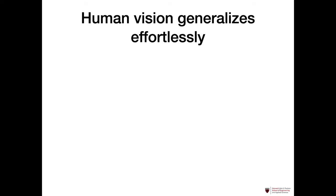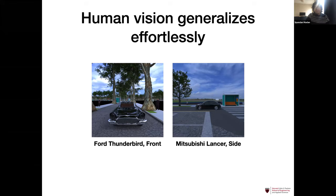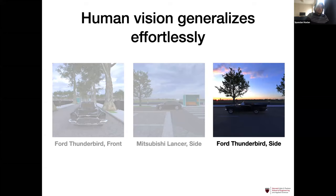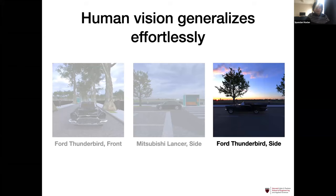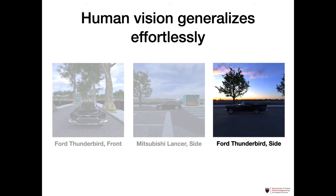One very remarkable thing that we all are aware about human vision is that it generalizes effortlessly. If I was to show you two pictures — a picture of a Ford Thunderbird from the front and a Mitsubishi Lancer from the side — it would be super easy for you to generalize to a new picture: a Ford Thunderbird from the side. The question we want to ask is: can modern CNNs do this? Can they generalize to this third image if they're only shown the first two images?